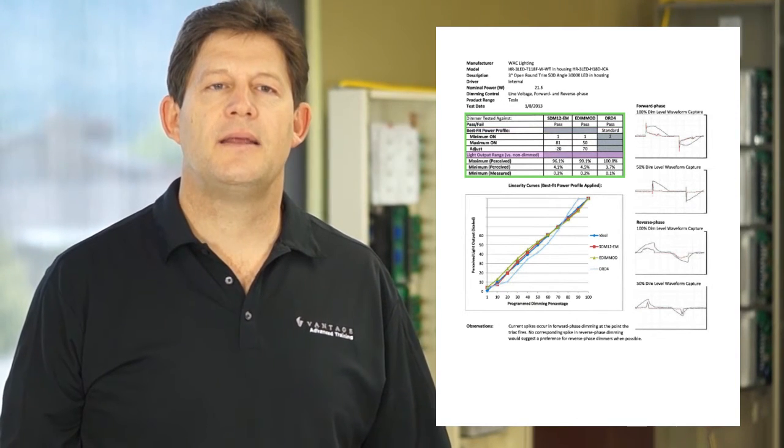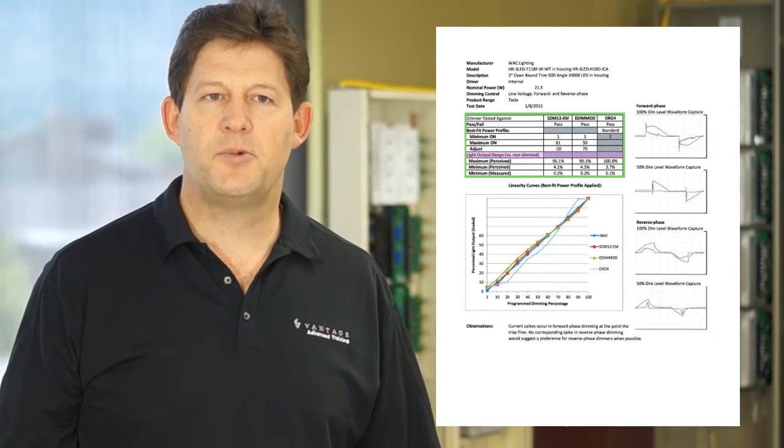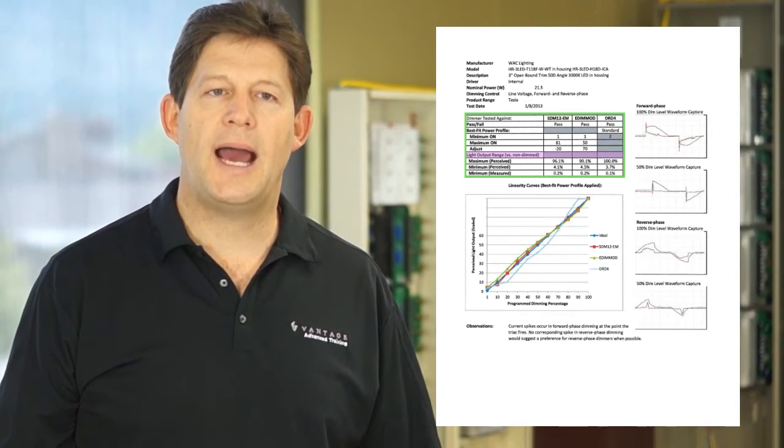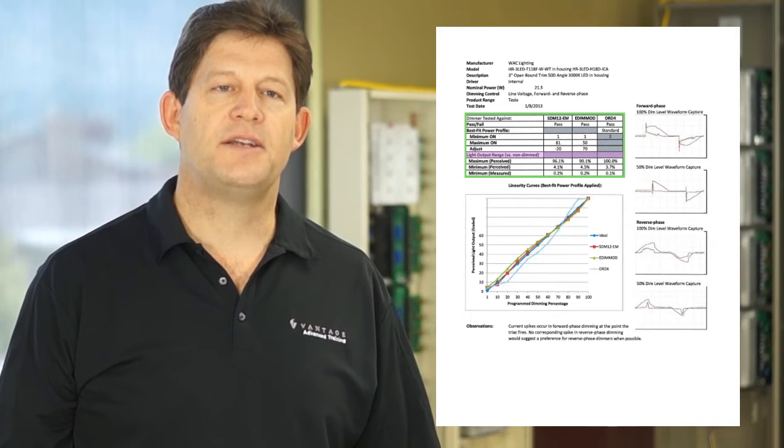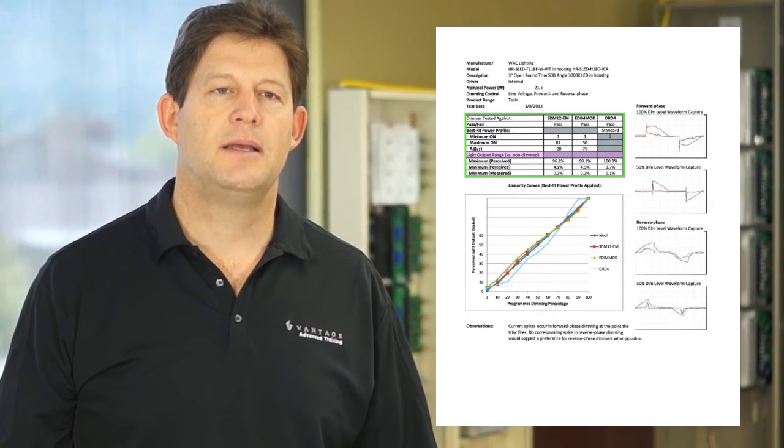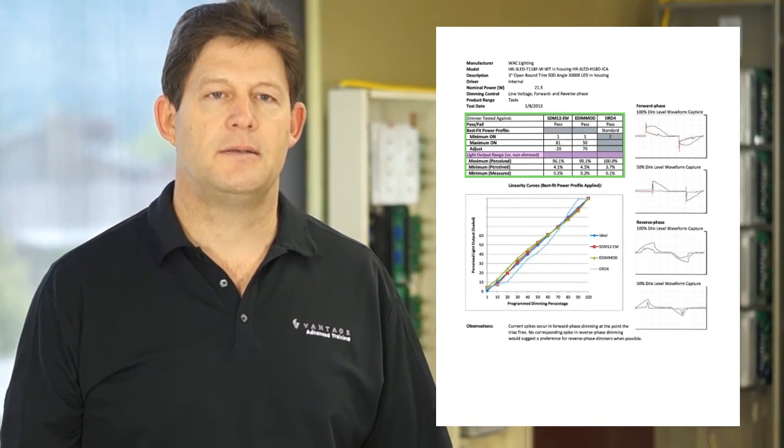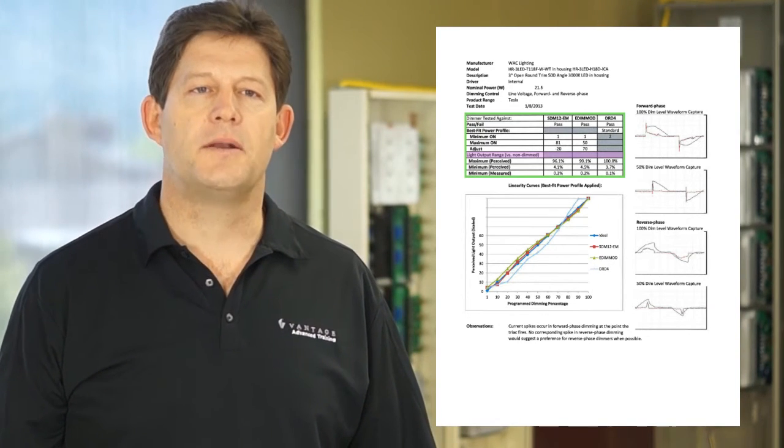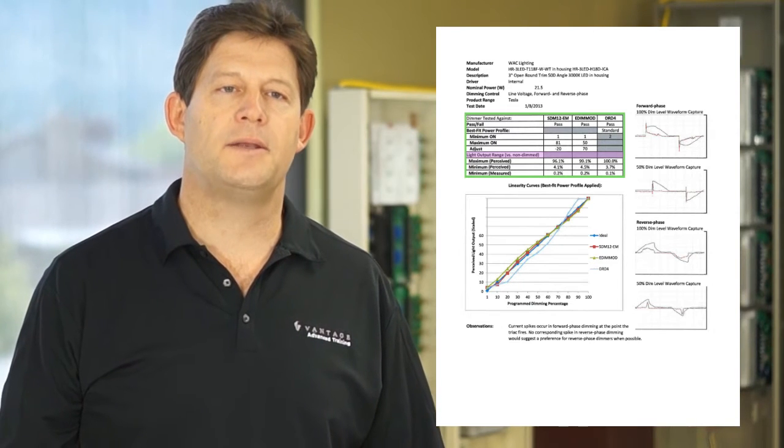Finally we display the maximum and minimum intensities. Because we apply a maximum on or high end trim to native Vantage dimmers, we may see a slight reduction in maximum intensity, never less than 95%. The DRD4 maximum will always be 100% because there is no high end trim.